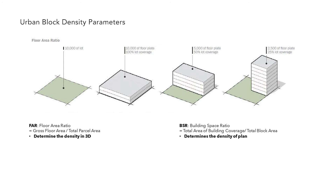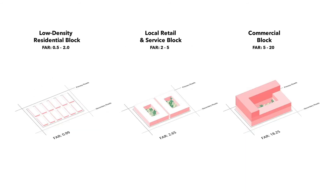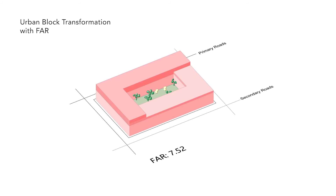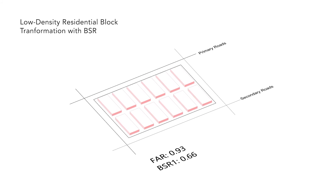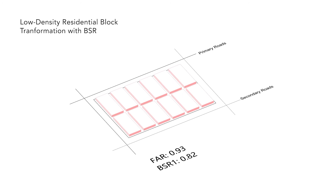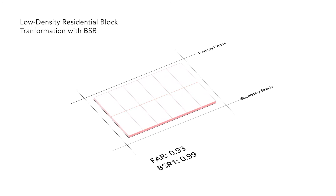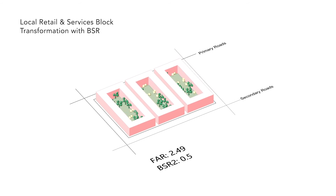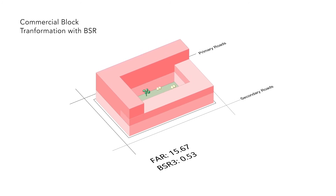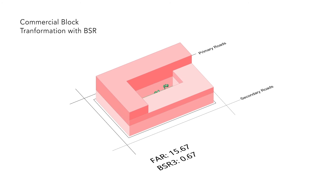Part D is the city form generation. Urban block form is defined by a set of parameters including FAR (floor area ratio) and BSR (building space ratio). FAR input to each block is divided into three categories. As the FAR input increases, the form of block changes across each category, reflecting different types of building form. The low-density residential block takes form from single-family houses — as BSR increases, spacing between houses decreases. The local retail and service block is a peripheral block — as BSR increases, the courtyard area decreases. The commercial block is a peripheral block with extruded towers — as BSR increases, the building height decreases.